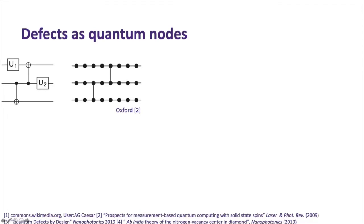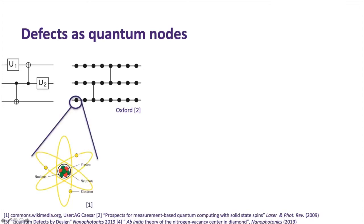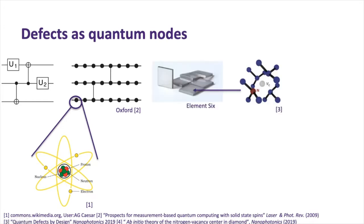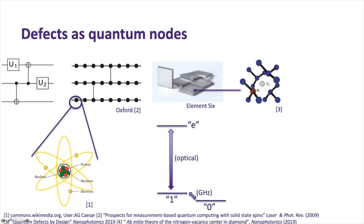If we think about what we want in one of these nodes, one first thought might be an atom — it can emit light, connect these nodes, and store information in its quantum mechanical states. In fact, trapped ions and cold atoms are qubit platforms today. But we can also look in the solid state, which has a form factor that we can fabricate and make devices out of.